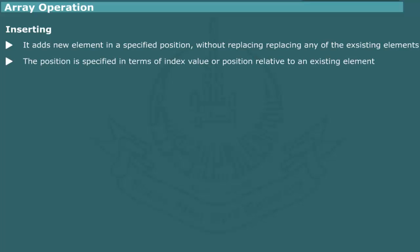Inserting. The insertion operation adds a new element to the array in a specified position without replacing any of the existing elements. The position of the elements may be specified in terms of index value or relative to an existing element. The new element might, for example, be placed before a given element. In order to insert a new element in specified location, all elements to the right of element are being moved one place to create a room for the new element.